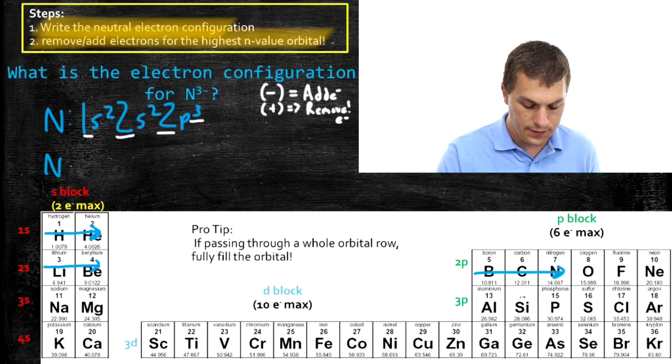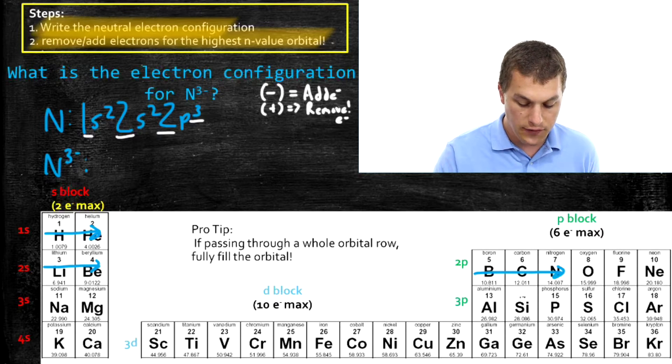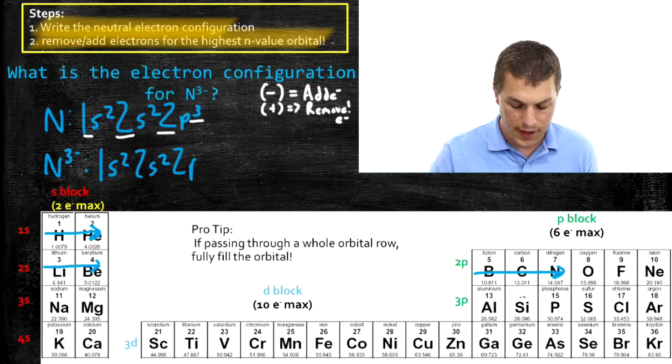So nitrogen three minus has a very similar electron configuration. 1s2, 2s2, 2p6.